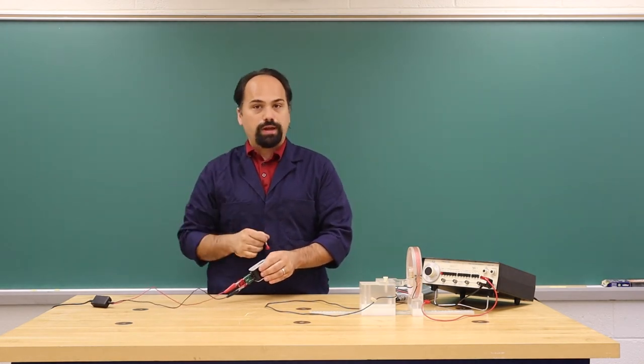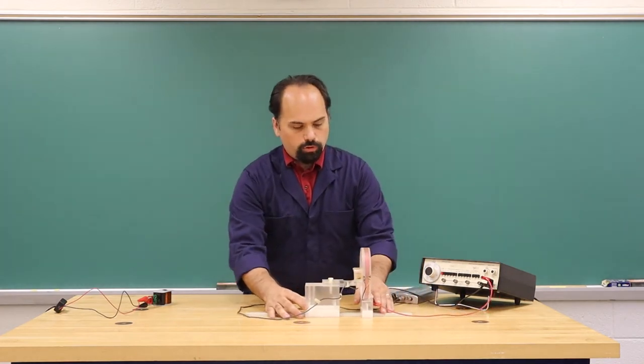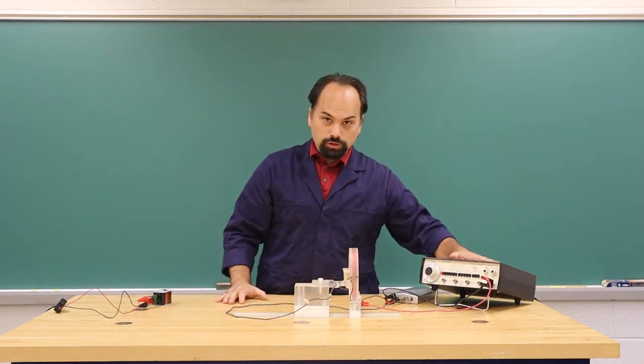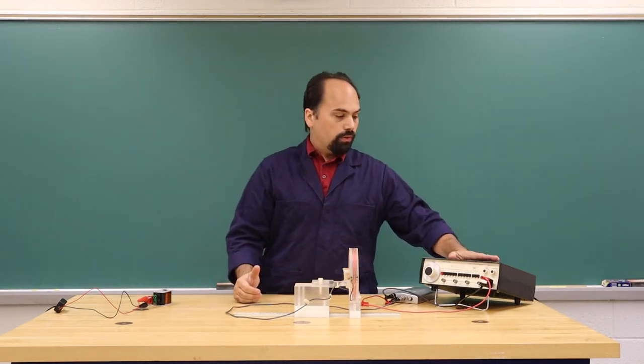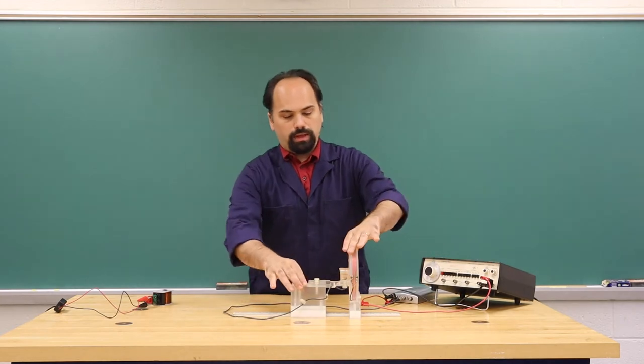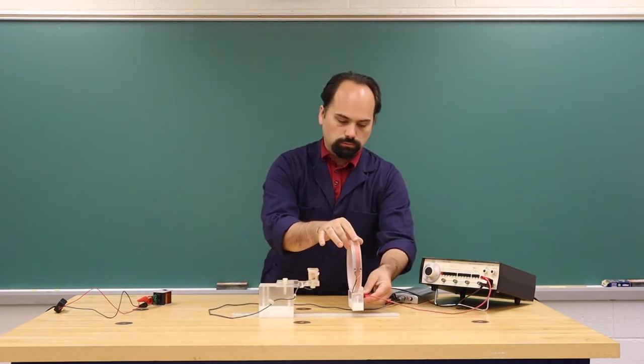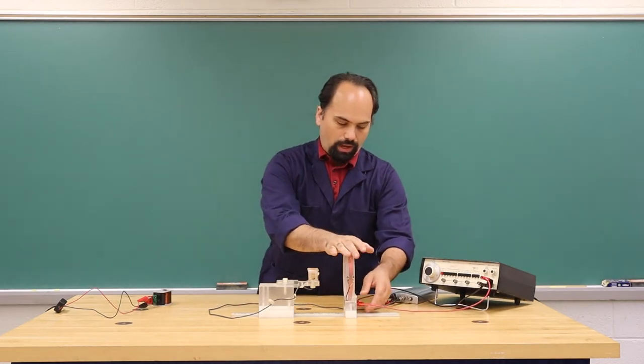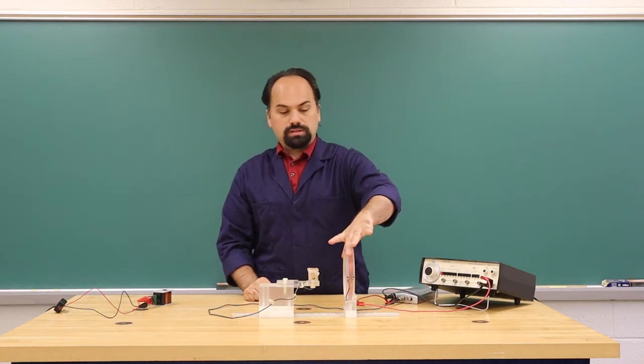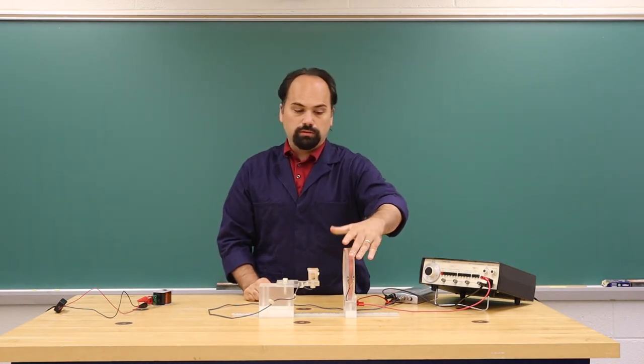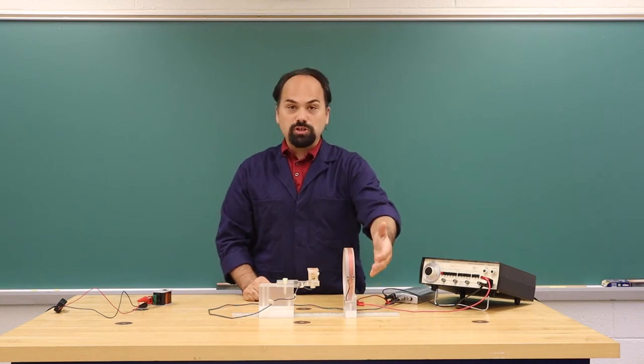In the second part of the lab, we will be using a function generator to create a repeating electrical pattern. This electrical pattern gets put through our primary coil and then into the oscilloscope so we can observe it directly. Since we have a changing electrical signal in a coil, this is going to produce a changing magnetic field.